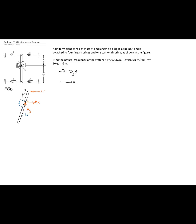The force of each linear spring is k times the linear displacement. The linear displacement is the distance times sine of theta — L/3 for the two springs above, and 2L/3 for the two springs below, giving k times 2L/3 sine theta for each of those.